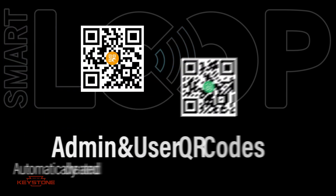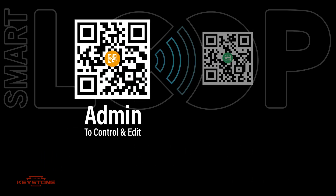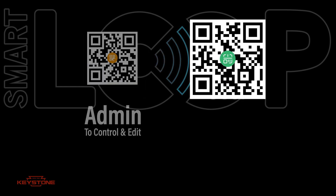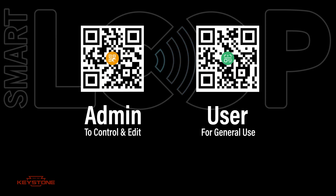When created, QR codes for admin and user access are generated and saved to your photos library. The code with an orange center is for administrator access. Only share the admin QR code with those you trust to control and edit the system, while the code with the green center is for user access. For general users, provide the user level code, which disables all editing capabilities. Save these QR codes to a secure location for future reference.